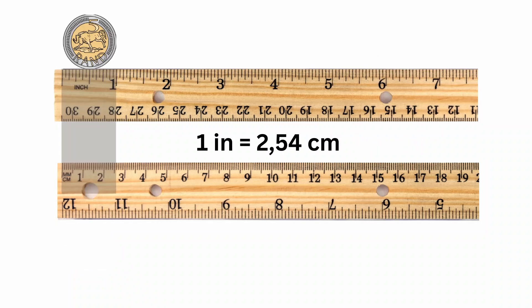In fact, one inch is about 2.54 centimeters, making one inch larger than one centimeter, as you can see from the rulers shown. One inch is about the same size as the diameter of a 5 Rand coin.